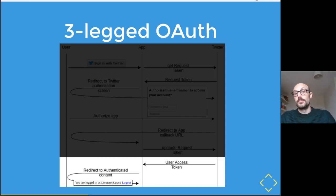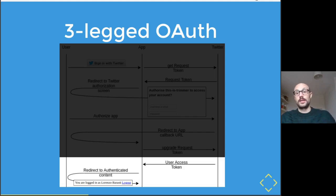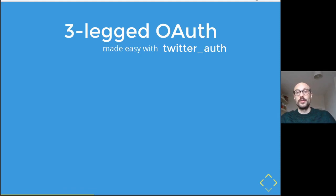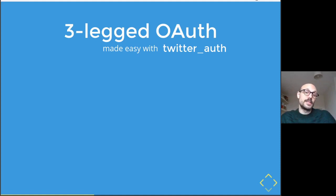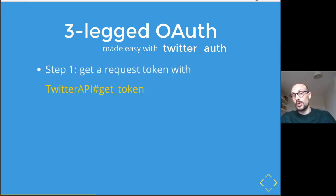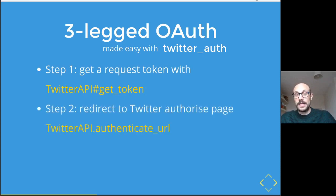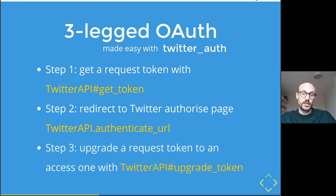If you look at the details of the process you'll notice there is a lot around signing requests and making sure all fields are included in the signature, which can make the process cumbersome to implement from scratch. We'll be relying on an open-source Crystal shard called twitter-auth, which I've been working on and published a few weeks ago. It makes the entire three-legged auth flow easier by providing simple methods to request a request token, redirect the user, and upgrade to an access token.